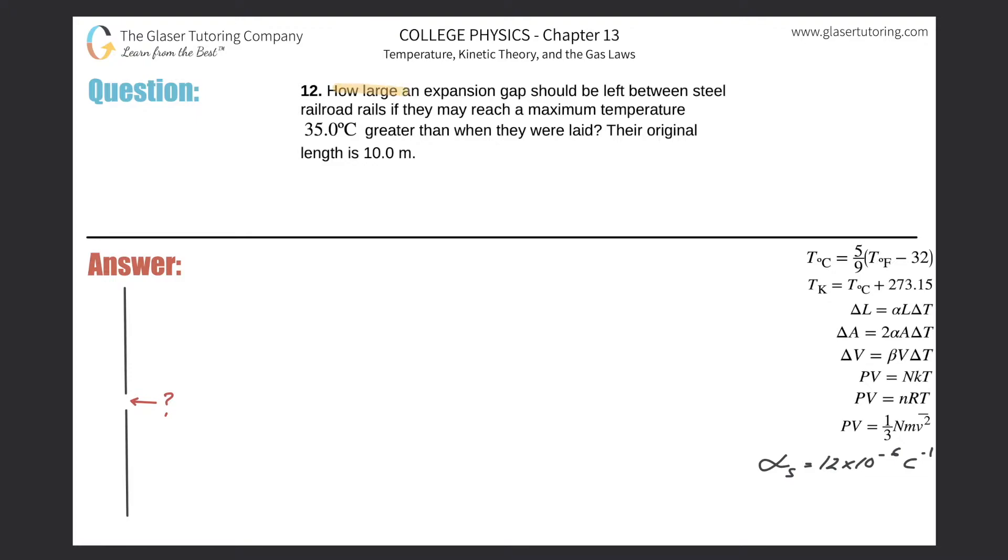Number 12. How large an expansion gap should be left between steel railroad rails if they may reach a maximum temperature 35 degrees Celsius greater than when they were laid? The original length is 10 meters.